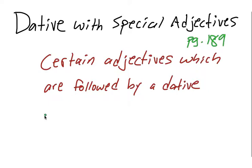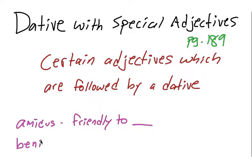Let me give a couple examples of these adjectives. Amicus can be used as an adjective, so you can be friendly to someone and that someone would be in the dative case. The adjective benignus, which means kind - you can be kind to someone and that someone would be in the dative.